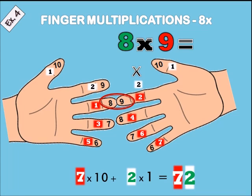Example four: eight times nine. Meet the middle finger and the pointing finger together, then count down: 1, 2, 3, 4, 5, 6, 7 — I have 7, so 7 times 10 is 70. On the left hand I have 2 fingers and on the right hand only the thumb, so 2 times 1 is 2. So eight times nine equals 72.